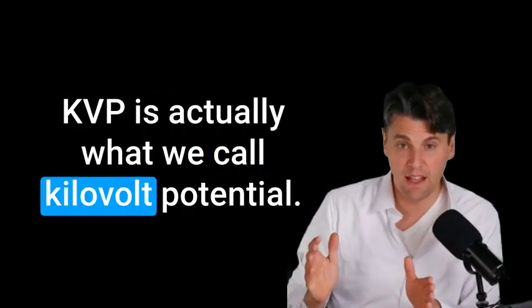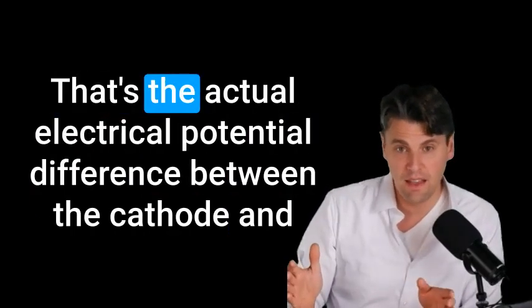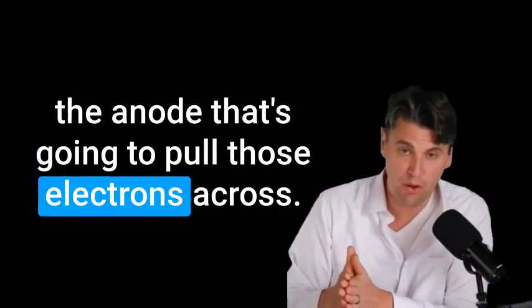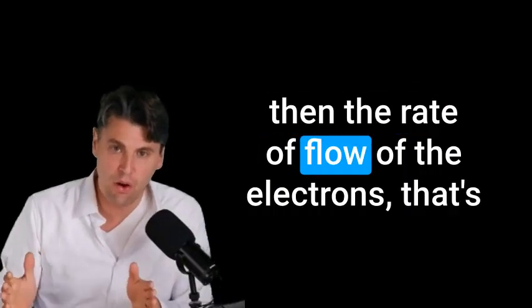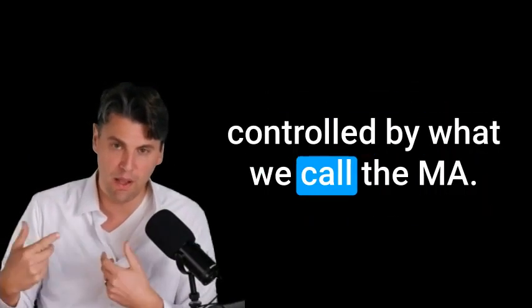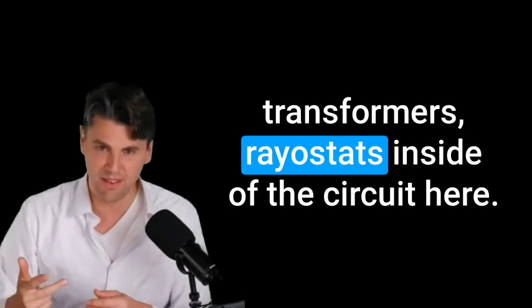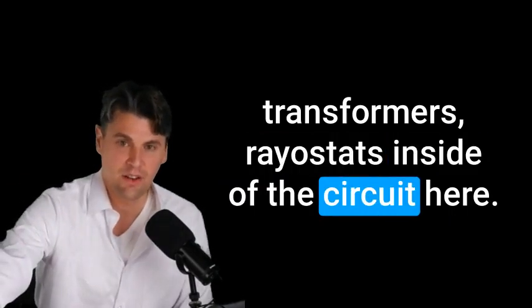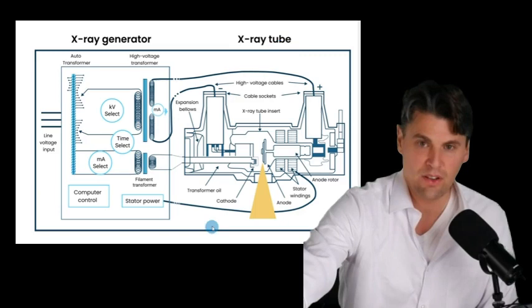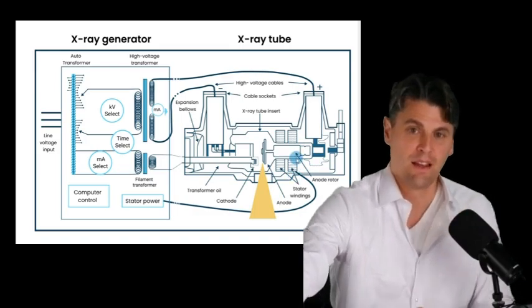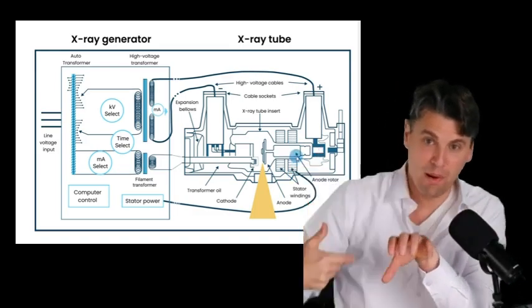So this is the first time I've talked about KVP and MA. KVP is actually what we call kilovolt potential. That's the actual electrical potential difference between the cathode and the anode that's going to pull those electrons across. And the rate of flow of the electrons, that's controlled by what we call the MA. See our video for more details about all the fun transformers, rheostats inside of the circuit here. And then this is just like we talked about, electrons coming from the cathode, hitting the target, and then out come our x-rays. And that is on a rotating anode, which is rotating because we have a rotor that's getting pulled by the stator.